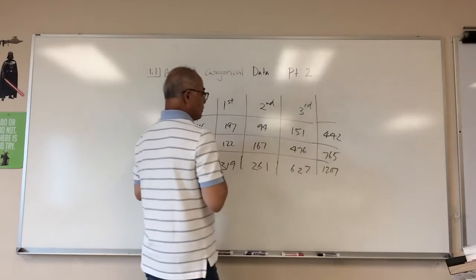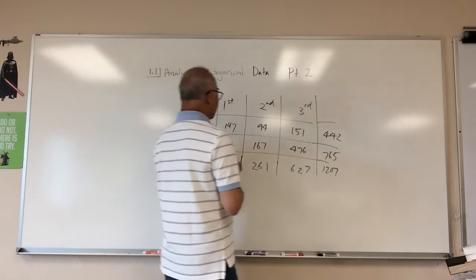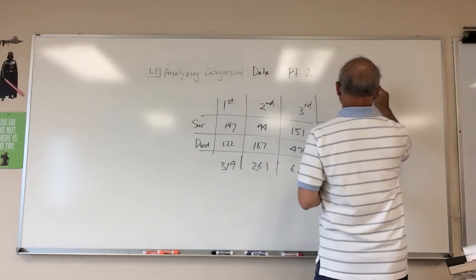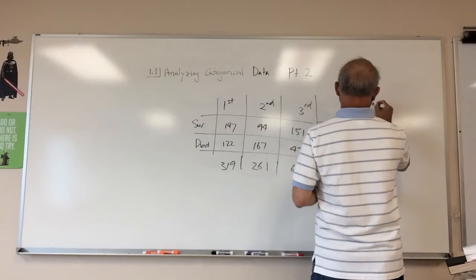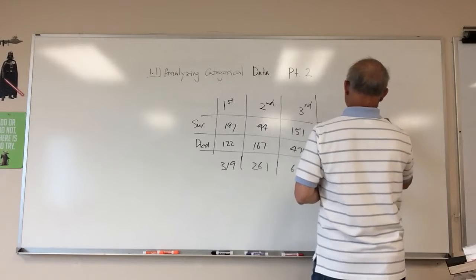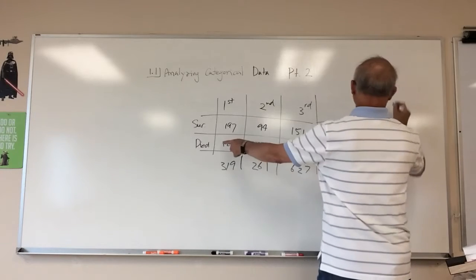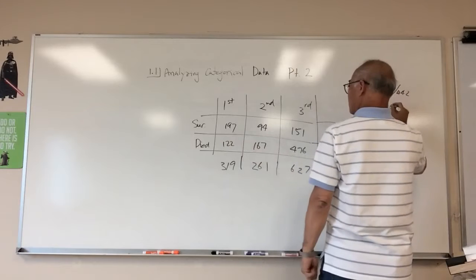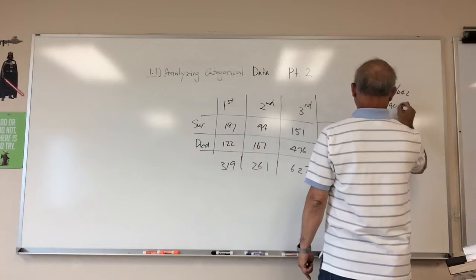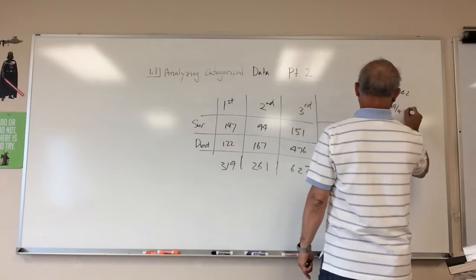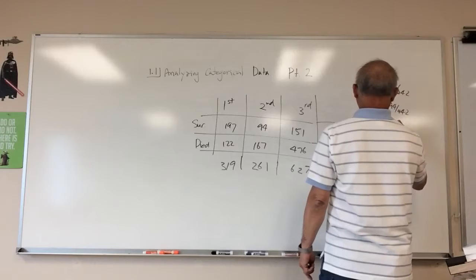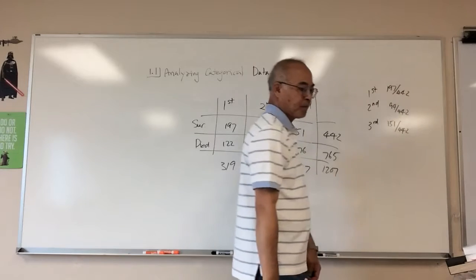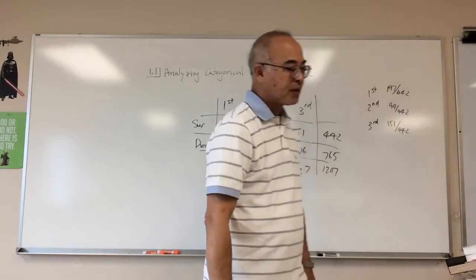In other words, given that I had survived, I can make a conditional relative frequency table. Given that I survived, the relative frequencies for first, second, and third class would be 197 over 442, 94 over 442, and 151 over 442.